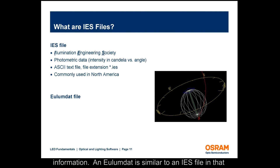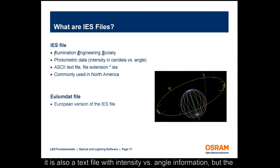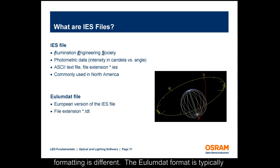A ULUMDAT file is similar to an IES file in that it is also a text file with intensity versus angle information, but the formatting is different. The ULUMDAT format is typically used in Europe.